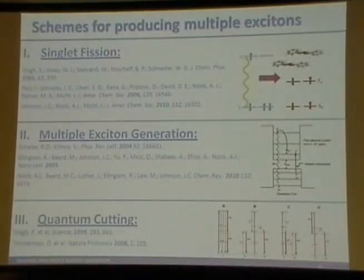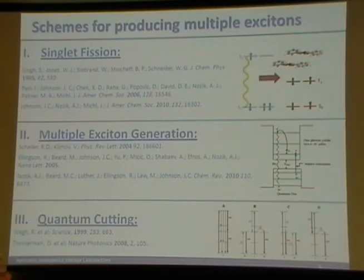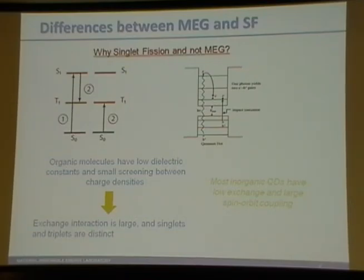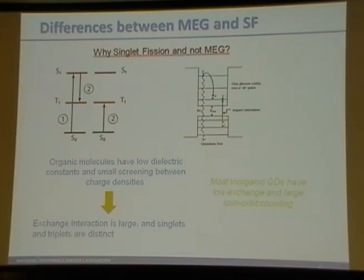There are several different ways of forming multiple excitons: singlet fission is the one I'm focusing on, multiple exciton generation (MEG) is one you've heard a lot about, and quantum cutting is another I won't cover in detail. Instead I'll focus on understanding the differences between singlet fission and MEG. If you had a keen eye, you might notice that these two diagrams — one for singlet fission and one for MEG in quantum dots — look extraordinarily similar. You have one photon in, a highly excited state gives up some energy to form another excited state — in this case another exciton, in this case a triplet. So why do we name them differently and talk about them in different languages?